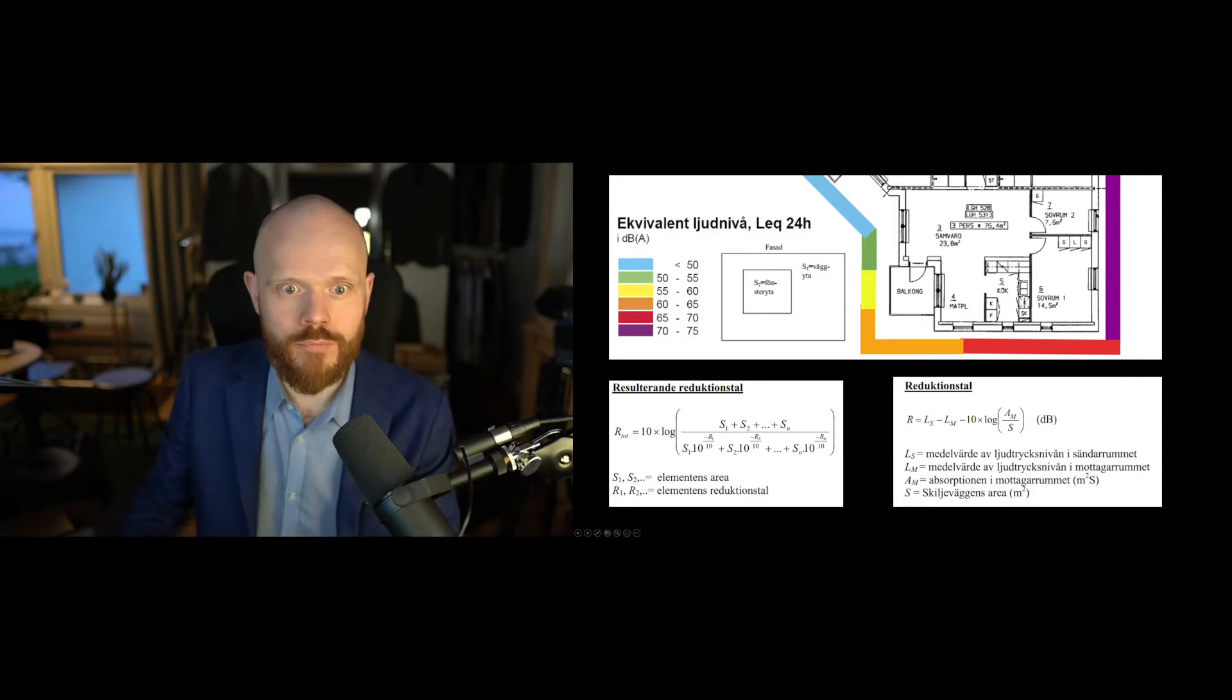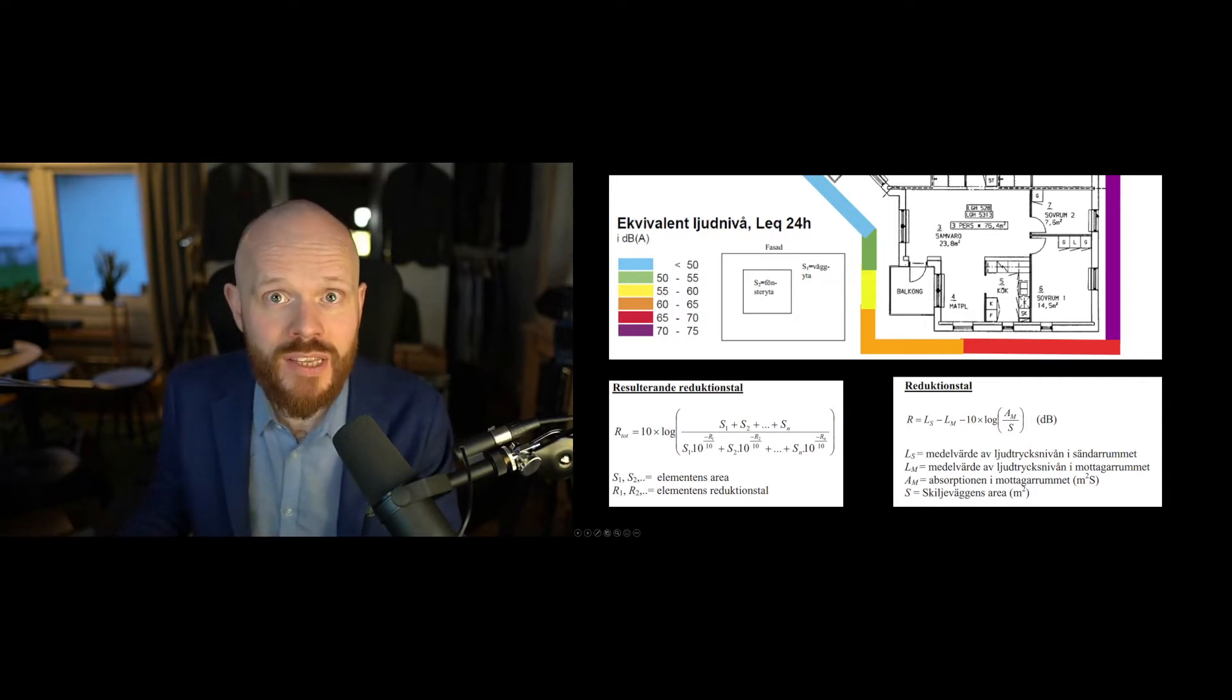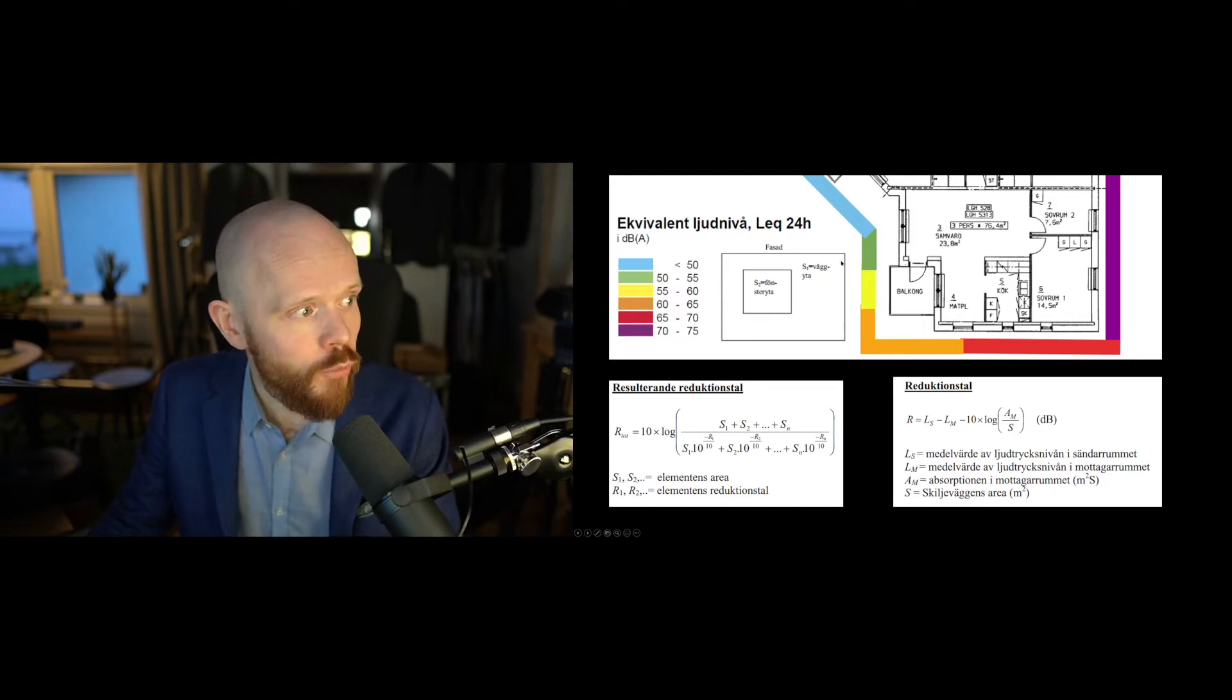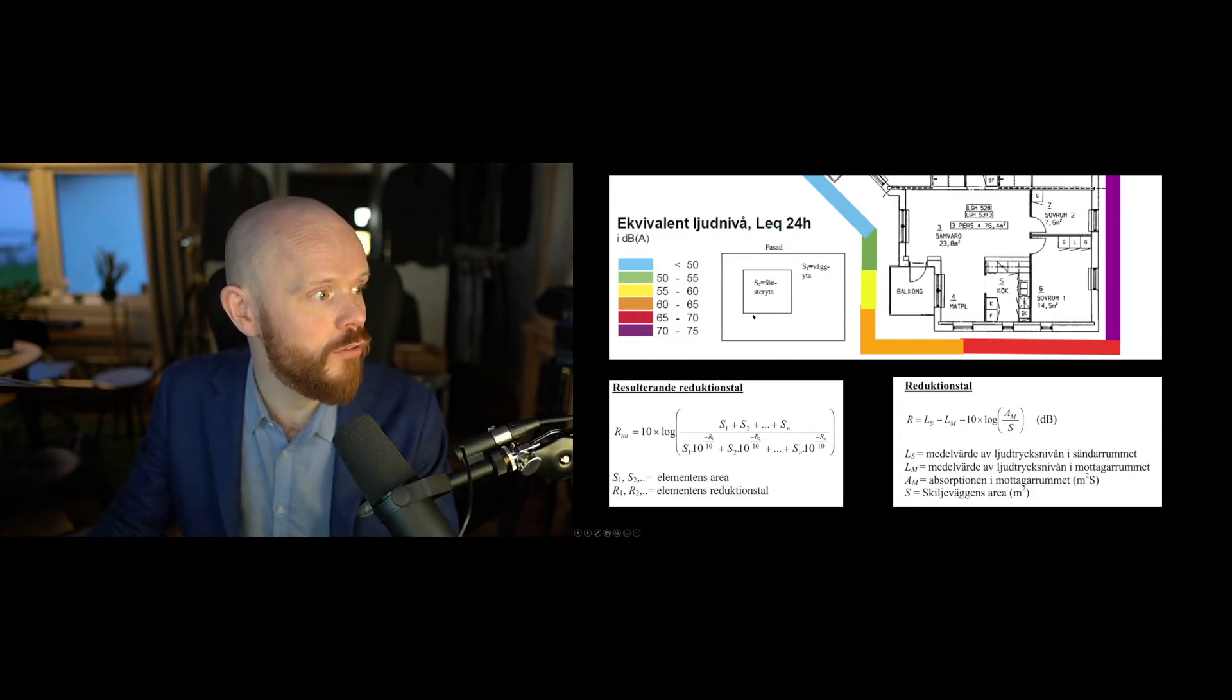Then we can check the separating partition—you get S1 and S2, surface one and surface two. The whole facade is partially wall and partially window—it's glass and then it's wall.